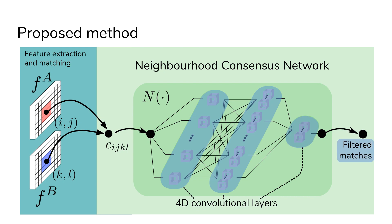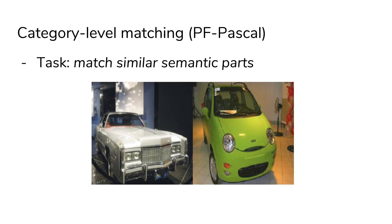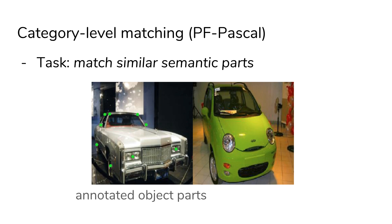Finally, we obtain improved, geometrically consistent filtered matches. We first evaluated the proposed method for the problem of category-level matching, using the PF Pascal dataset. Here, given annotated object parts in the first image, the task is to find their correspondences in the second image.